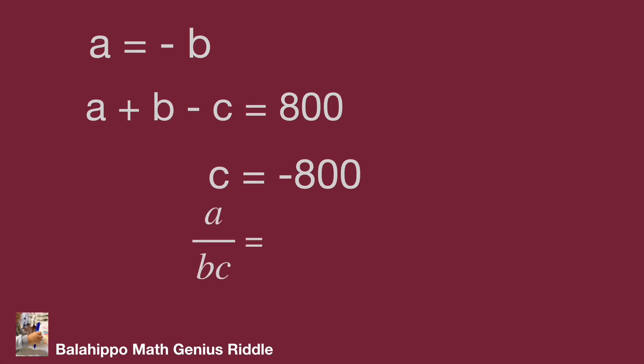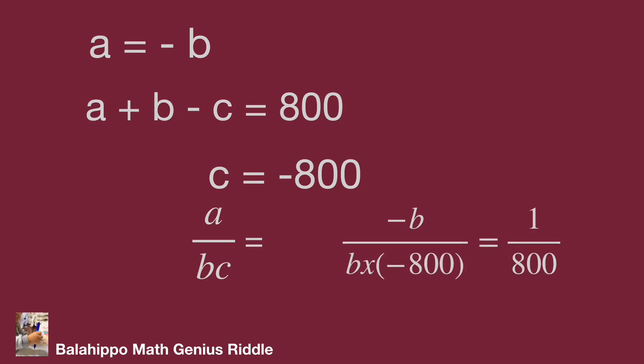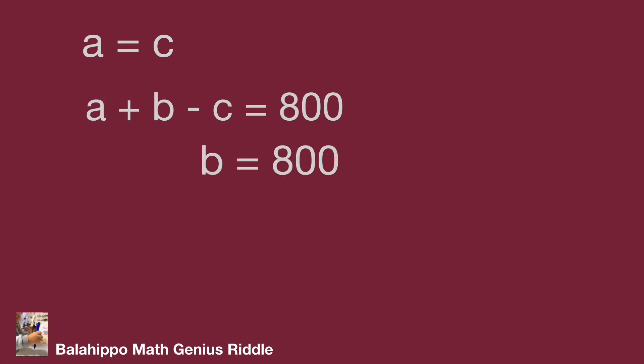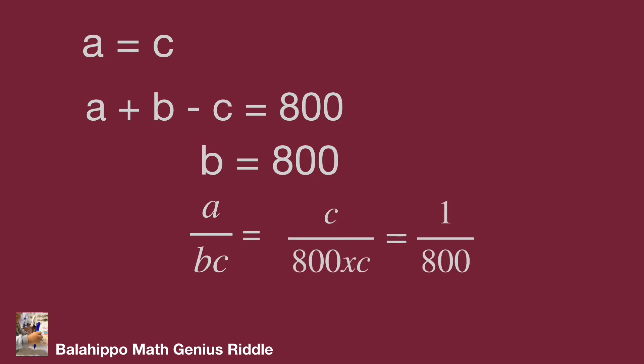For a over bc, we substitute a by minus b and c by minus 800, giving a value of 1 over 800. While a equal to c, substituting into a plus b minus c equal to 800, so b equal to 800. Substituting a by c and b by 800 into a over bc, the value is also 1 over 800.